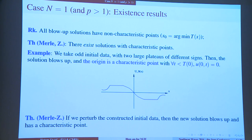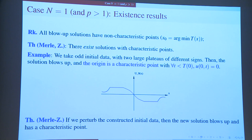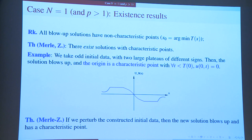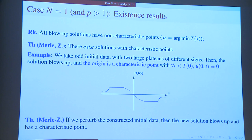What is difficult is to have a solution with a characteristic point. This was an open problem until some years ago when we solved it with Frank Merle with this small example. Take initial data which is odd, with large plateaus. From finite speed of propagation, it stays constant and x-independent in a smaller interval of space, so you can solve it like an ODE — the ODE is explicit and blows up. Because it is initially odd, it will stay odd all the time, so u(0) will always equal 0 and we will have a characteristic point at the origin.